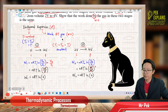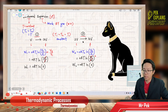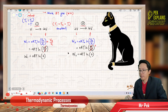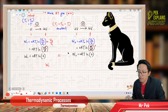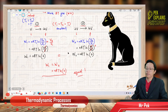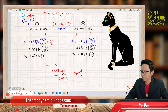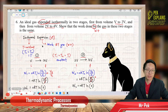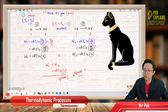So W1 = W2 = NRT ln(2). They are equal. Therefore, it is proven that the work done by the gas in both stages is the same. Just use the formula W = NRT ln(V2/V1) for an isothermal process.